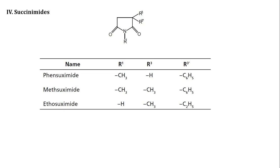Next is Succinamide derivatives. The succinamide derivatives are obtained by substitution in the basic skeleton of succinamide at R1, R3, and R3' positions using appropriate substituents. Examples of succinamide derivatives having anti-convulsant activities are Phensuximide, Methsuximide, and Ethosuximide.